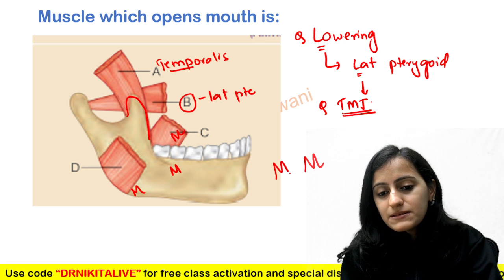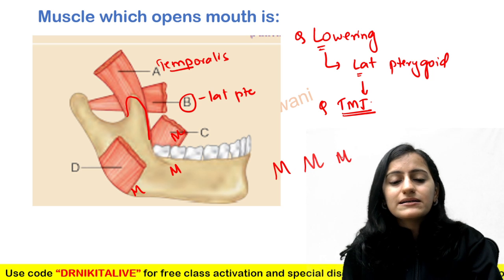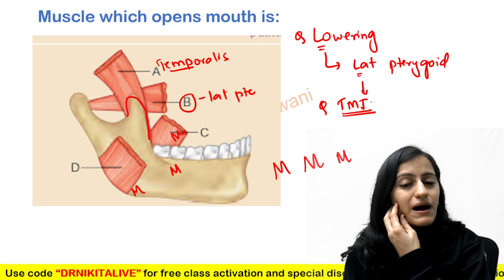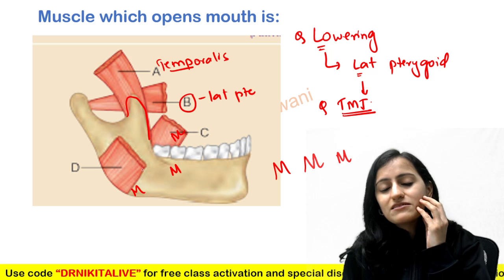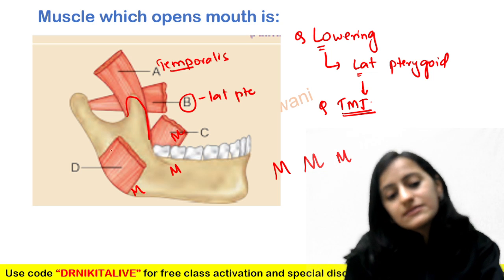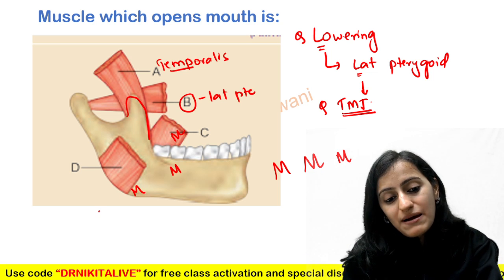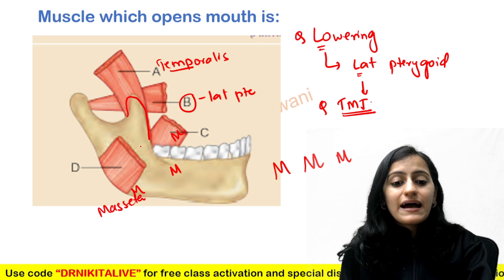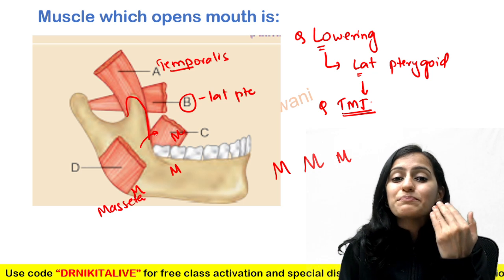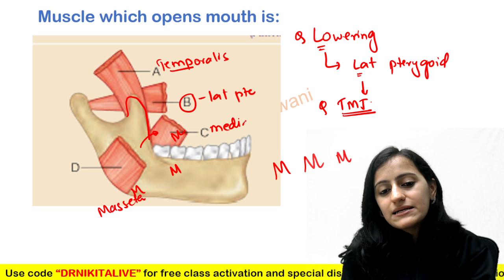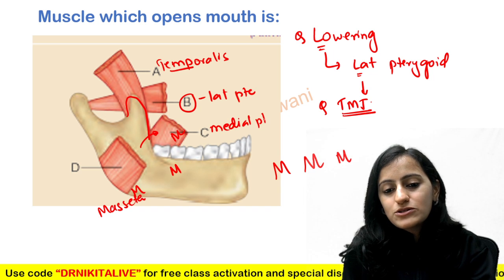Remember: mandible ke andar bahar — it is M, M muscle. The bahar wala, the muscle which we feel when we clench, that is the masseter muscle. And the one which is medial to the mandible, that is medial pterygoid.